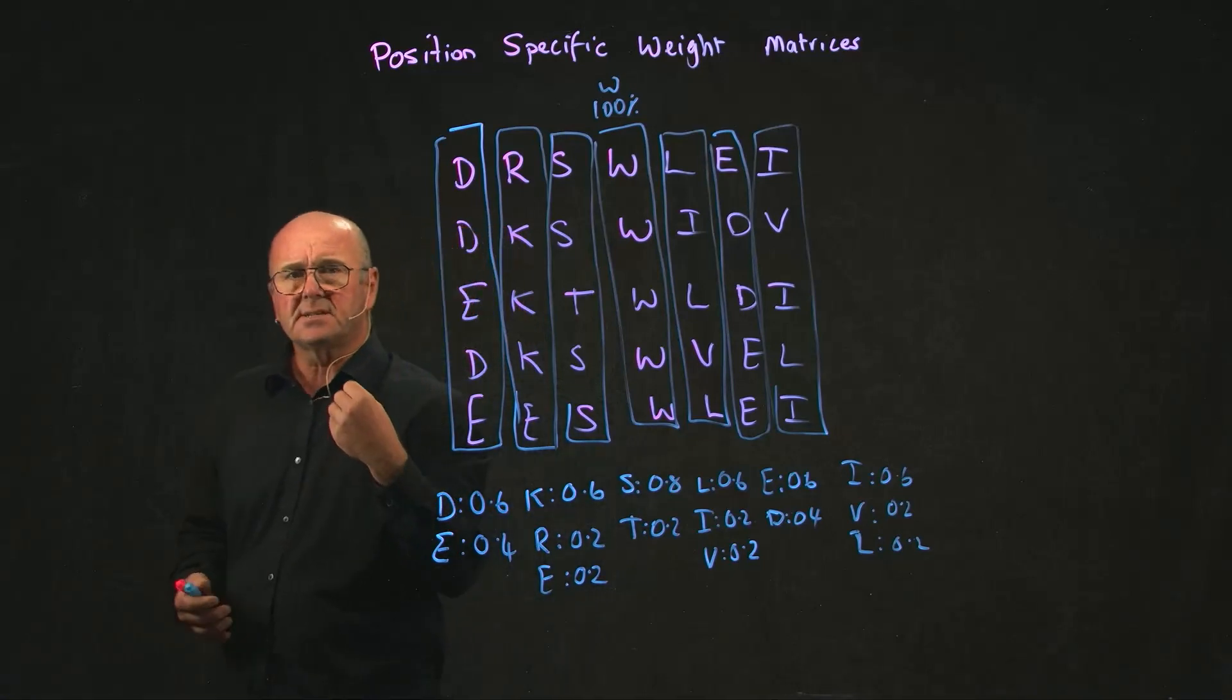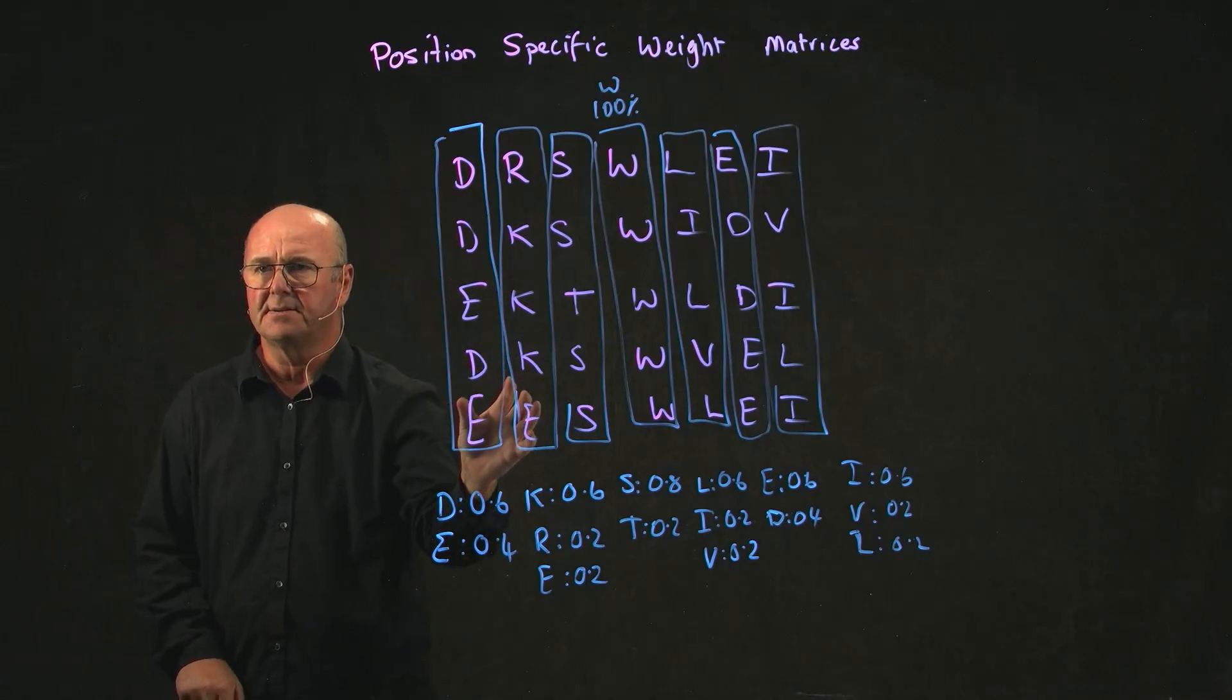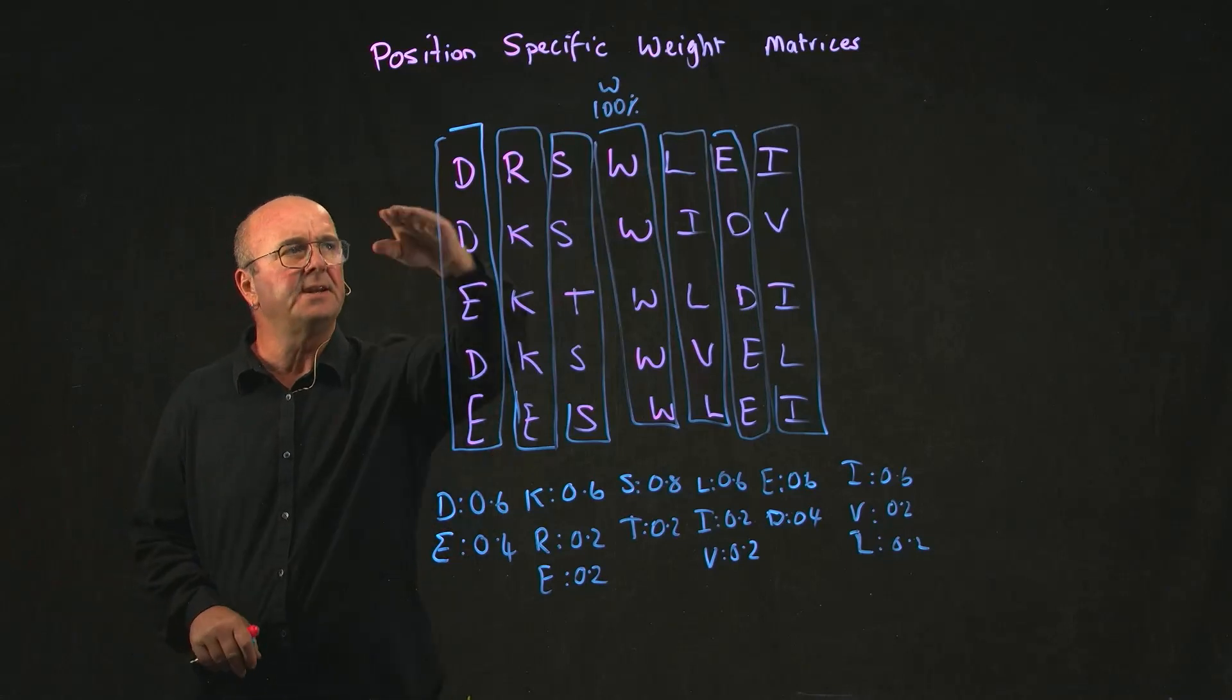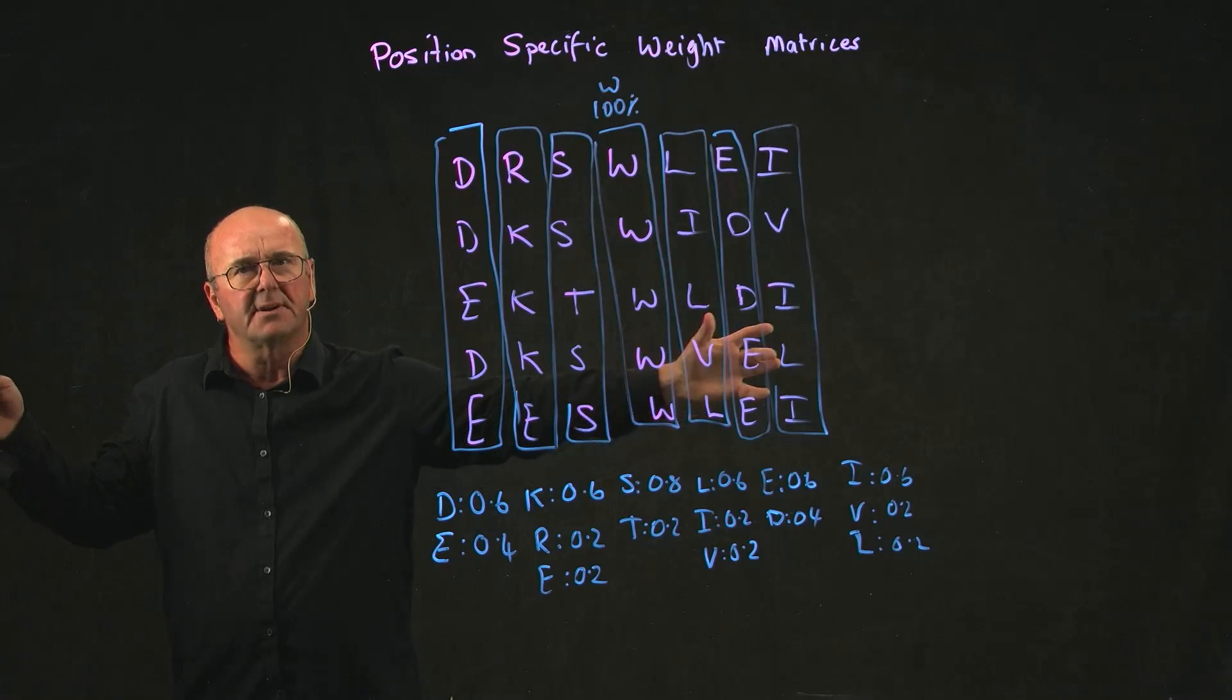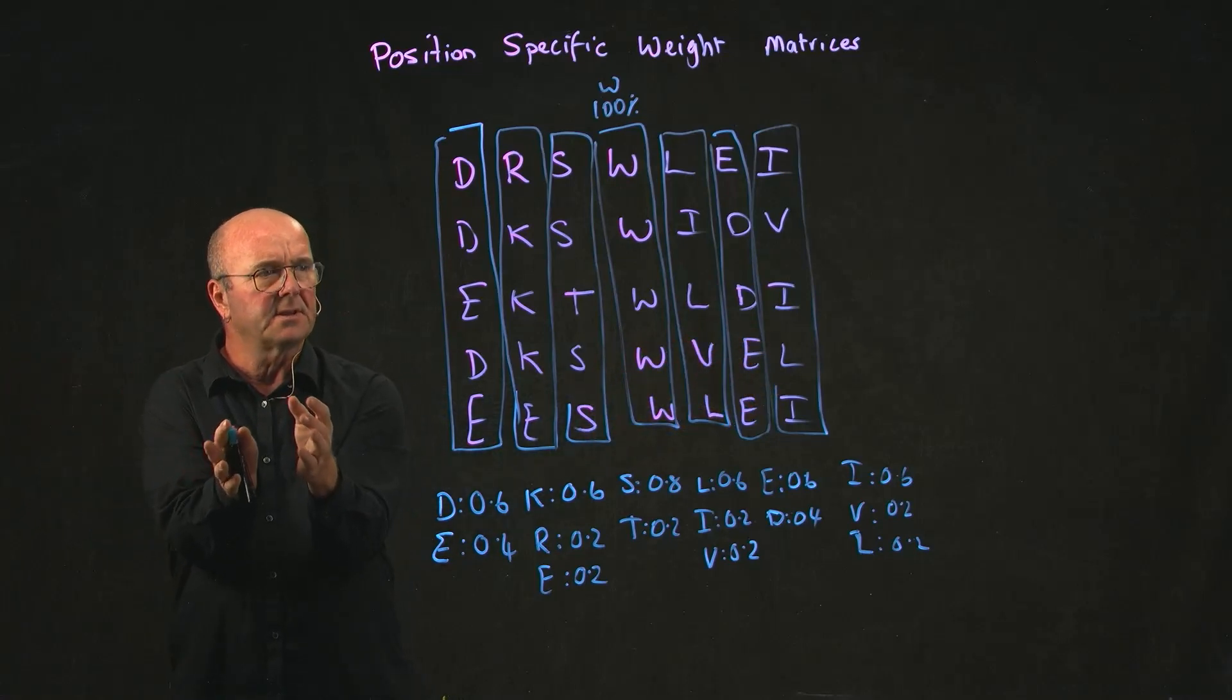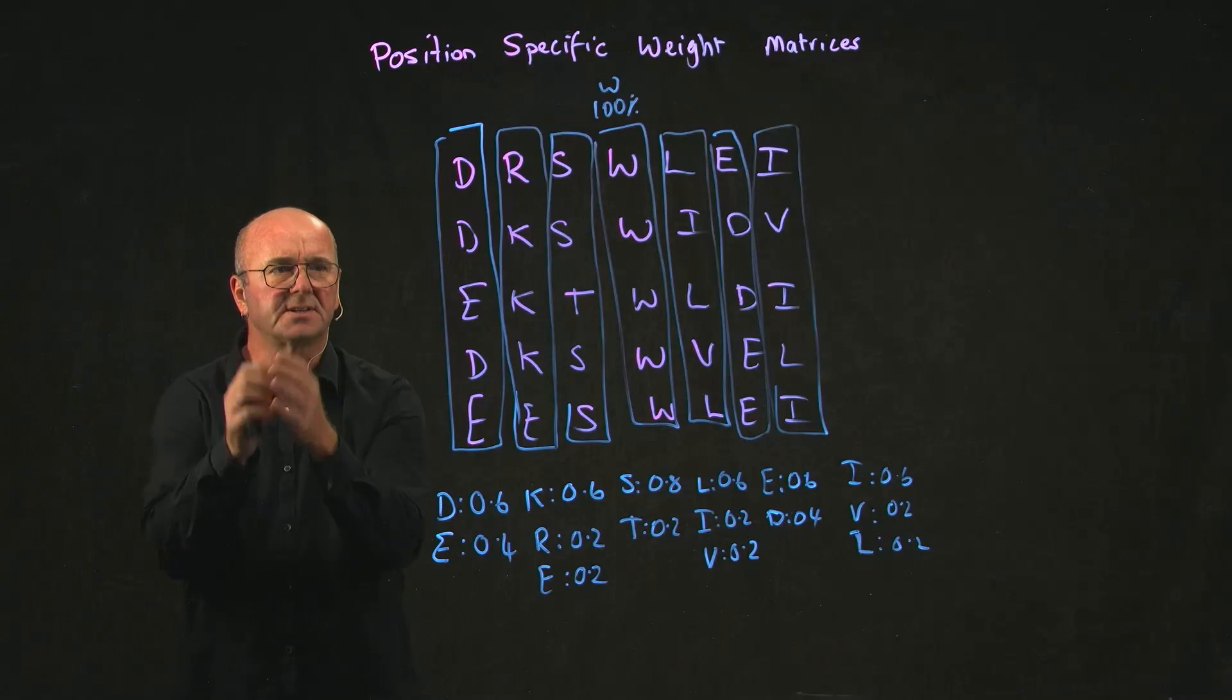So I've built this position-specific weight matrix dependent on an alignment that I've created. It doesn't depend on a database. It doesn't depend on anything else. All I need is these similar sequences. In fact, I don't need the sequences to be similar over their whole length. I can identify a region of the sequences and build a position-specific weight matrix over just a small region.